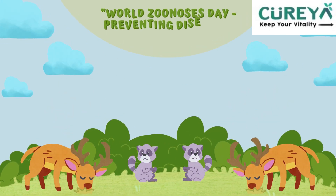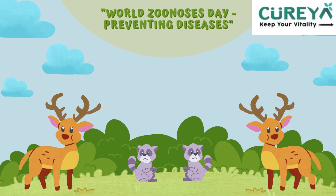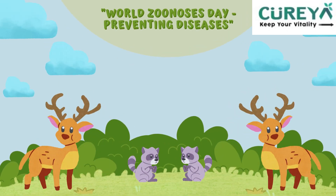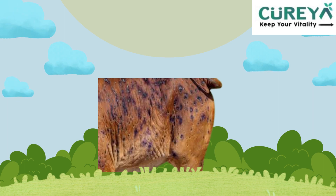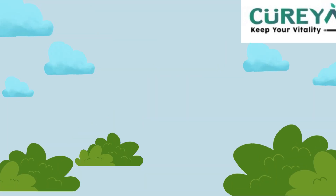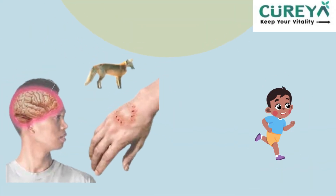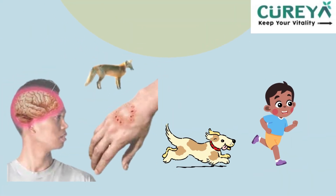Zoonotic diseases can be prevented by two ways. First, by preventing animals from getting infections. Second, by preventing disease transmission to humans.